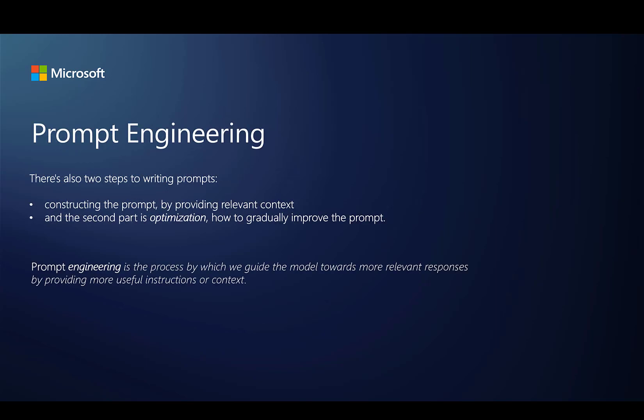Let's just rehash what prompt engineering is. The idea with prompt engineering is that it's a process by which we guide the model towards more relevant responses by providing more instructions or more context. There are two parts to prompt engineering: one is to construct a prompt in which you try to provide it with relevant context, and the other part is optimization — you try to gradually improve your prompt because no prompt is perfect on your first attempt. You'll try to change that prompt by adding more context or rewording it, for example.